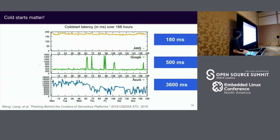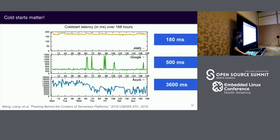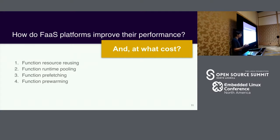How well do functions platforms actually do cold starts? These graphs are from a 2018 Usenix paper. The numbers might have changed significantly, but the point is that you definitely don't want every function execution to be a cold start — and depending on your workload, even the cold starts that do occur might be a significant problem. We're going to talk concretely about four optimizations that a platform might do, all related to either speeding up cold starts or reducing them.